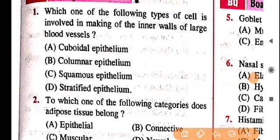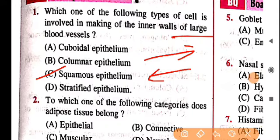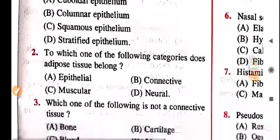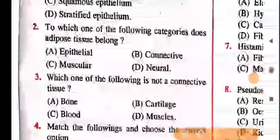Question 1: which type of cell is involved in making the inner wall of large blood vessels? It is squamous epithelial tissue, because in blood vessels and alveoli, oxygen and carbon dioxide exchange takes place. This requires a single layer that allows exchange of substances — that is squamous epithelial tissue. I covered this in detail earlier.